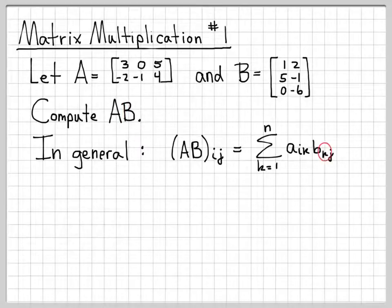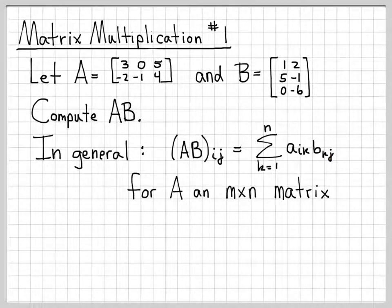B sub k, j is the kth row, j column of matrix B. So we're just taking entries from the matrix A and multiplying them by entries from the matrix B. But you'll notice the i index indexes the rows of matrix A, while the j index indexes the columns of the matrix B.